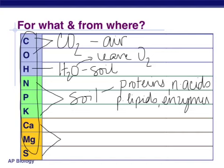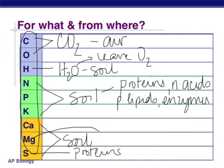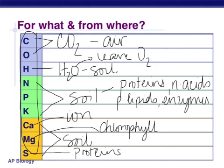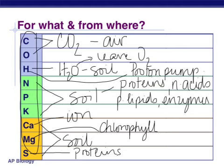Calcium, magnesium, and sulfur are also important and also come from the soil. We'll see sulfur a lot in our proteins. Magnesium, as you hopefully remember, is highly important for chlorophyll. Calcium helps with ion regulation, and hydrogen does too — we need that for our proton pump. So that's where they're coming from, and these are some of the things they'll be used to make or aid with.